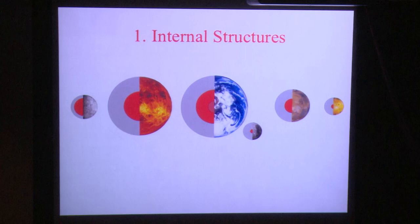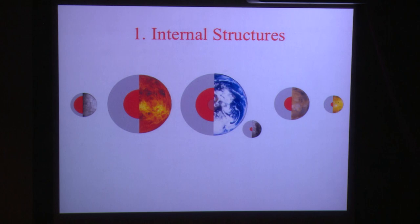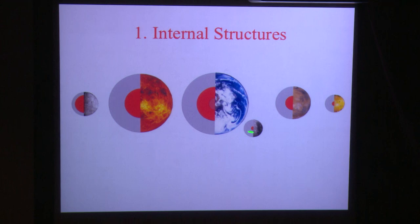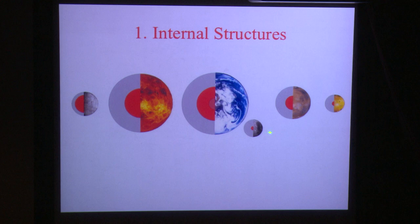To begin with internal structures — this is what we think the insides of silicate bodies look like in the solar system: Mercury, Venus, Earth, the Moon, Mars, and Io. The Earth is the only one for which we know there's an inner core. Also notice that Io and the Moon have about the same size, but the Moon has a smaller core, probably because of the special way it formed.